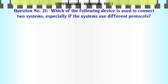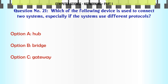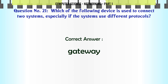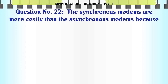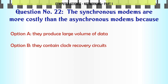Which of the following devices is used to connect two systems, especially if the systems use different protocols? A. Hub. B. Bridge. C. Gateway. D. Repeater. The correct answer is: Gateway.